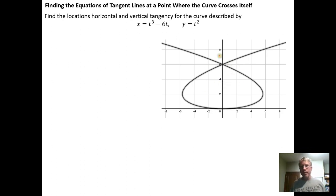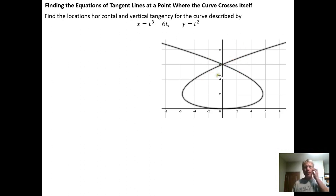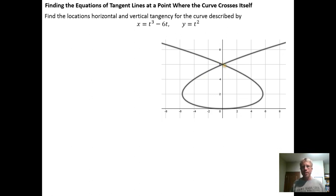We can see right here that it crosses itself, which means that there are actually two tangent lines to the curve at that point. The question is how do you find the equation of those tangent lines? This particular example, and I think the ones in the homework, have been contrived so that they come out on a lattice point. You can see that the point at which they cross is (0, 6).